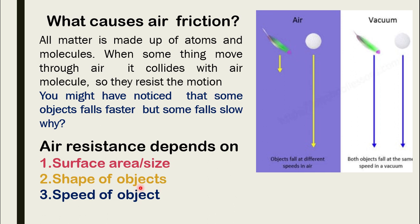Air resistance also depends on the shape of objects. Planes are designed to have minimum air resistance so they can move fast — shape of the object affects air resistance. Number three is the speed of the object. The faster the object moves through the air, the more particles hit it, increasing friction. More speed means more resistance. For example, when riding in a car with your hand out, you feel air resistance — it is directly proportional to speed.